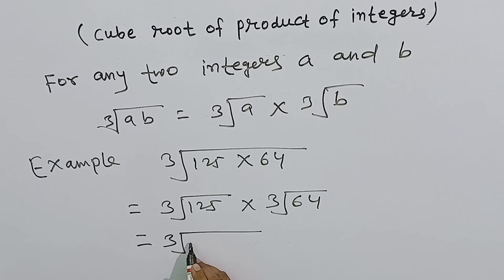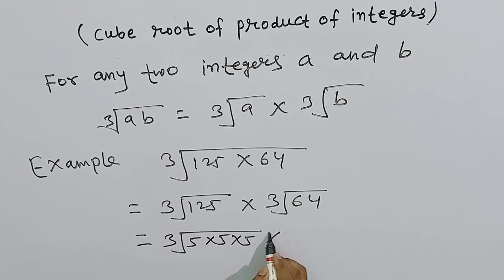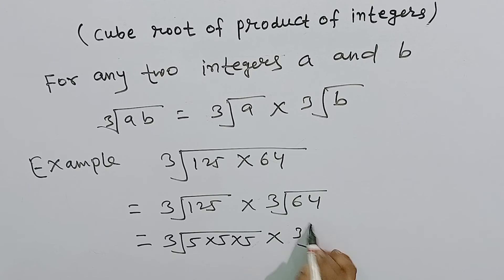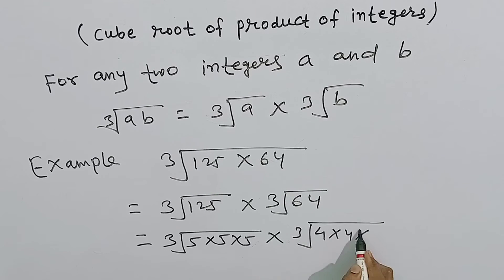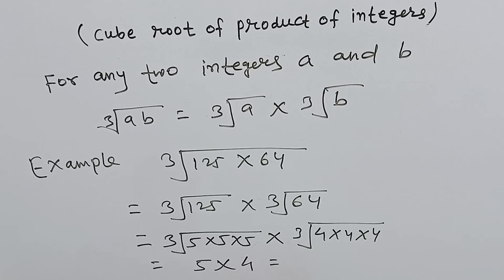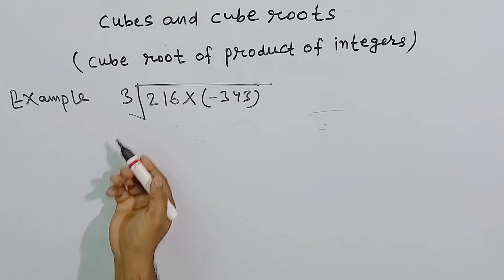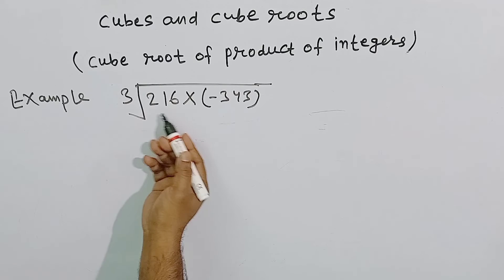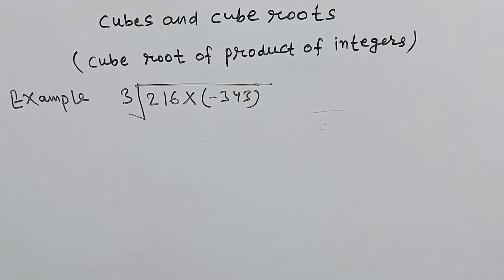So is equal to cube root of 125, जो 5 का cube है यानि 5 into 5 into 5, into cube root of 64, जो 4 का cube है यानि 4 into 4 into 4. जब value निकालेंगे तो यहाँ से 5 मिलेगा और यहाँ से 4 मिलेगा। Is equal to 20 — यह हमारा answer हुआ।